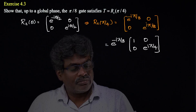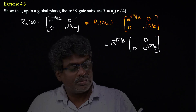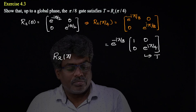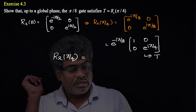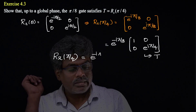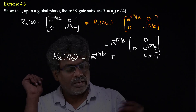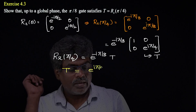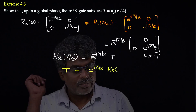If you observe carefully, the resulting matrix is nothing but the T gate. So finally we can write Rz(π/4) = e^(-iπ/8) · T. Bringing T to the other side, that means T = e^(iπ/8) · Rz(π/4).